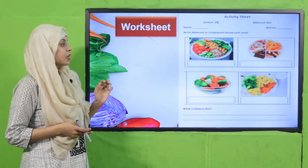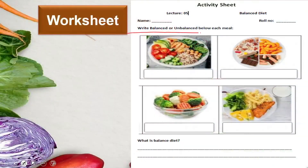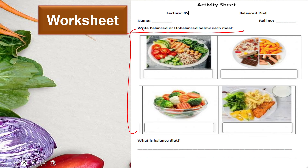Now it's time for practice. You can download this worksheet from the description box below this video or get it in print form from your teacher. Write 'balanced' or 'unbalanced' below each meal. In the first picture there are vegetables, rice and spinach — this is a balanced diet. Next is junk food with chocolates and pizza — this is unbalanced. Next is sautéed vegetables — balanced. Last one is pasta and bread — also balanced. You can define balanced diet using your book. Pause the video and complete this worksheet.